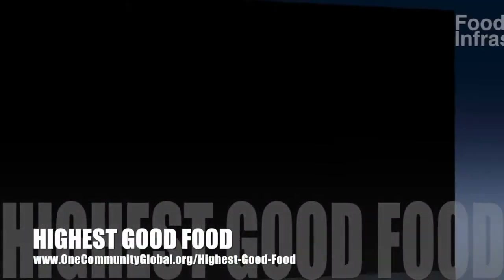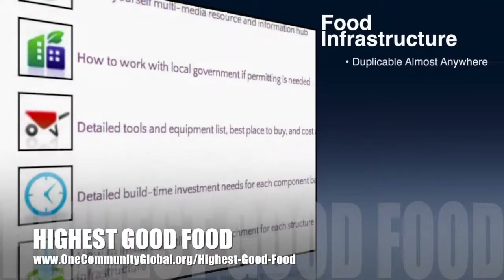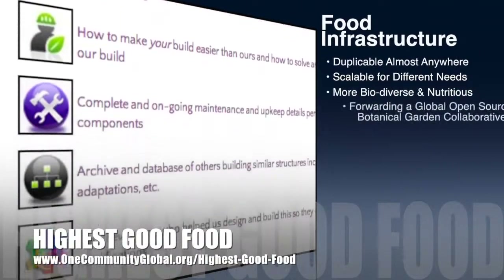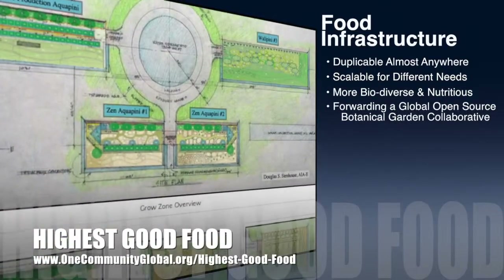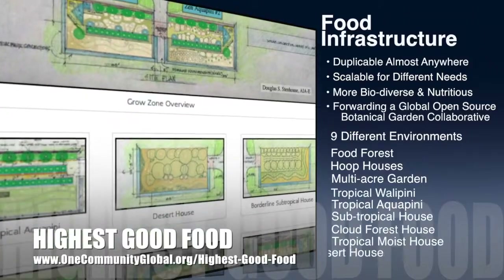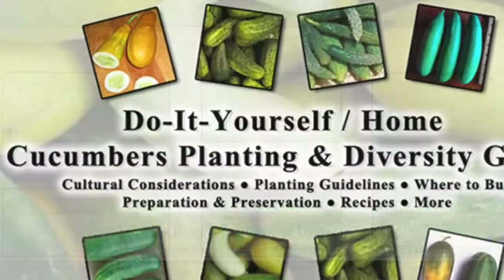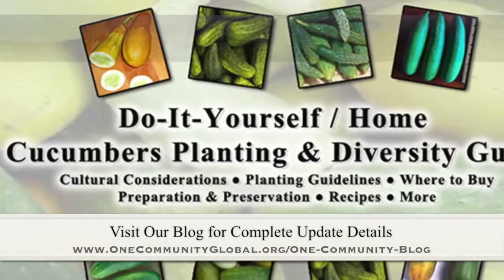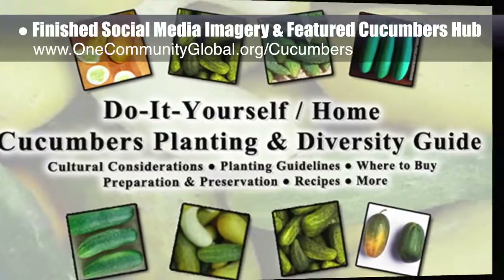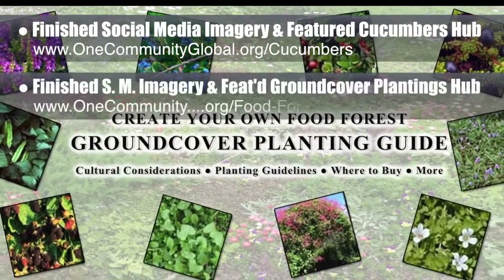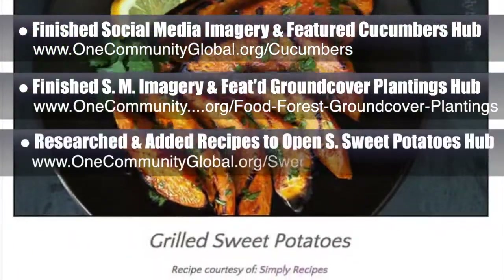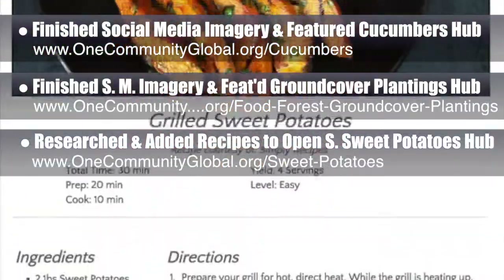OneCommunity's approach to Highest Good Food is duplicable almost anywhere, scalable for different needs, more biodiverse and nutritious, part of forwarding a global open source botanical garden collaborative, and includes nine different free shared and duplicable growing environments. This week, the core team finished the final social media imagery and featured our open source cucumbers hub, and also did this for our food forest ground cover plantings hub. We researched and added the final major component to the open source sweet potatoes hub: recipes.